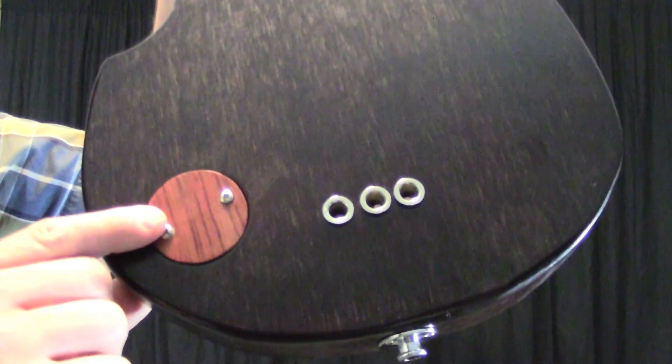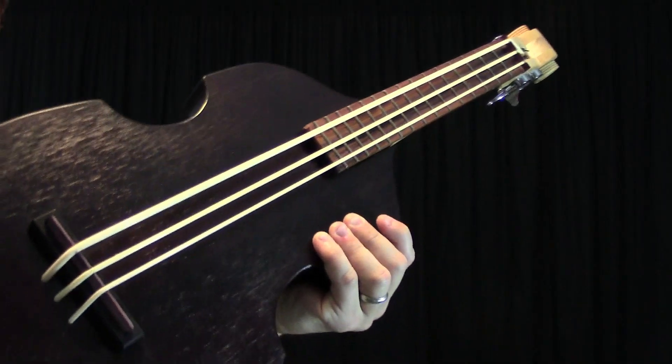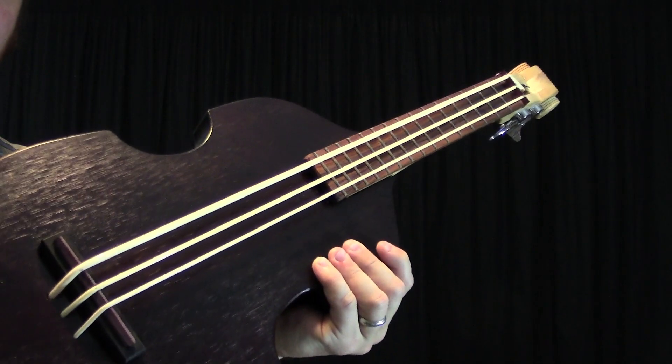The body is alder with a rosewood cavity cover. The fretboard is also rosewood and it has an overall scale length of twenty-one inches.